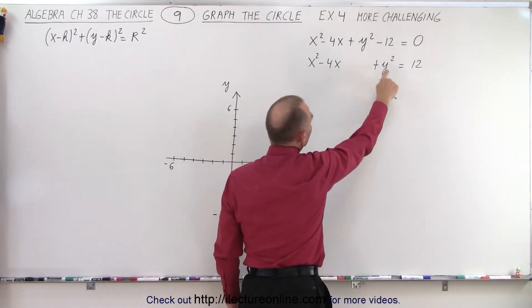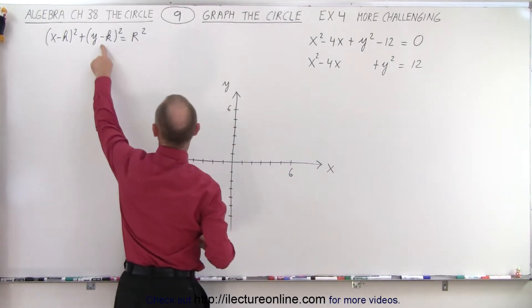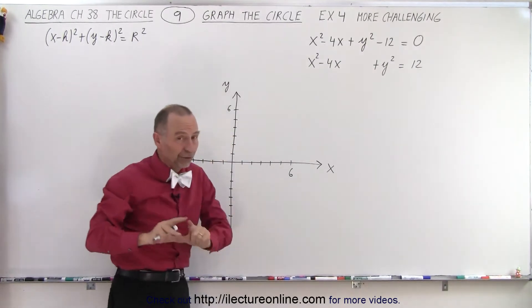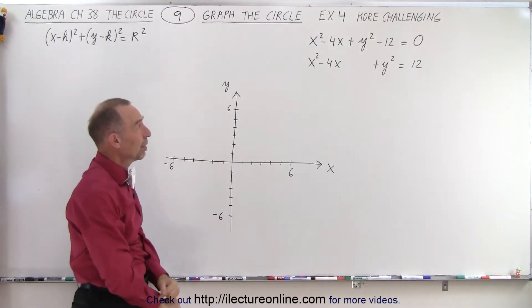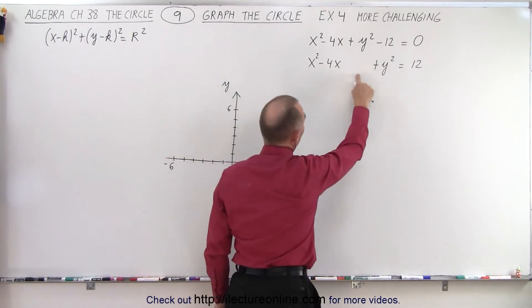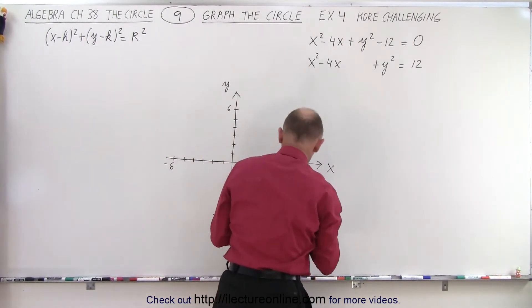So we don't need to do anything here. We already have it in this format with k equal to 0, so there we don't have to worry. But we do want to have a perfect square over here, so we need to add something there.